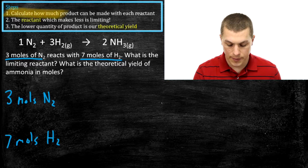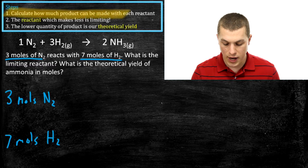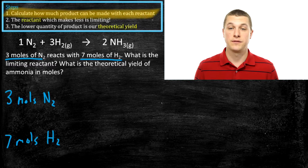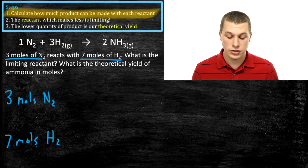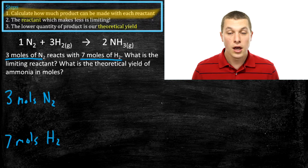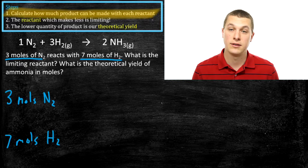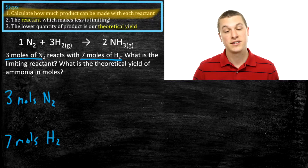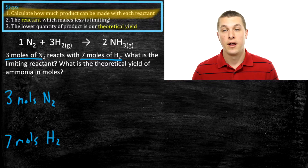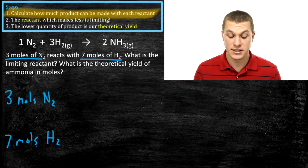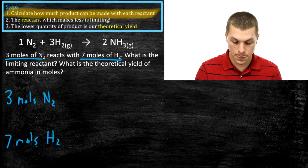The first step is to calculate how much product can be made with each reactant, and that's most of the problem. If you're having trouble doing that, go ahead and watch that stoichiometry video — that's where I go through that calculation in detail. What we're adding here is thinking about the product we can make when we consider that we have two different ingredients in different amounts.